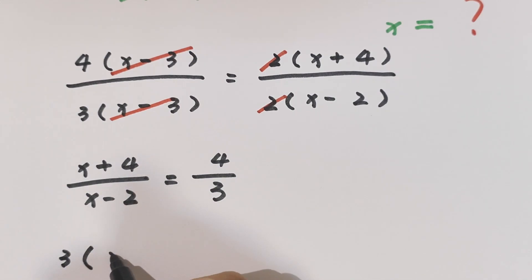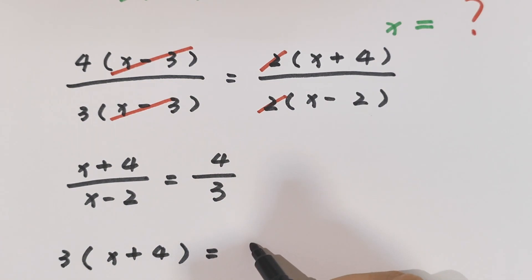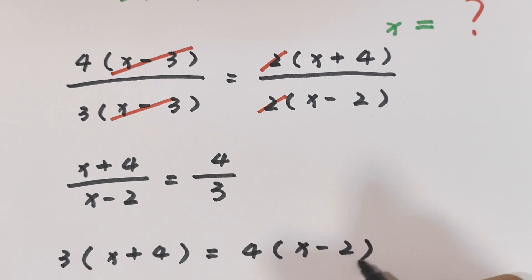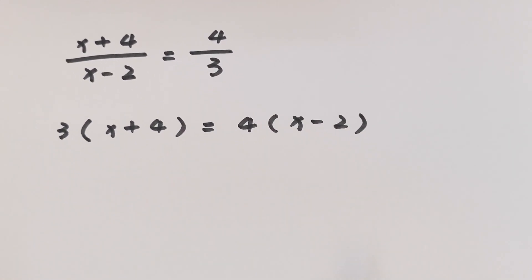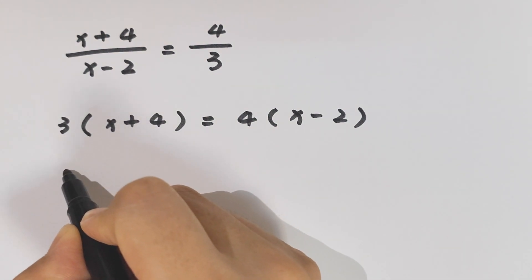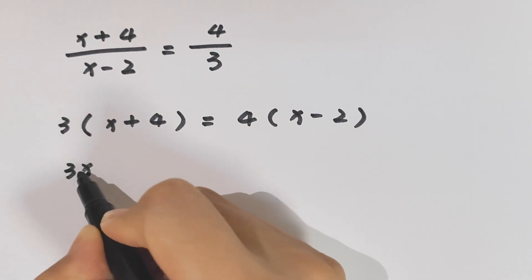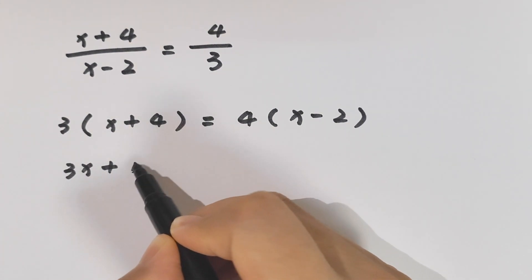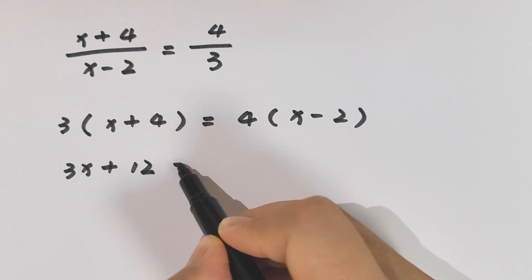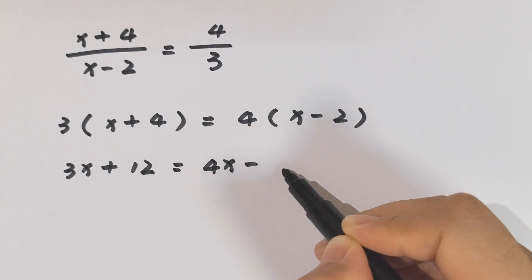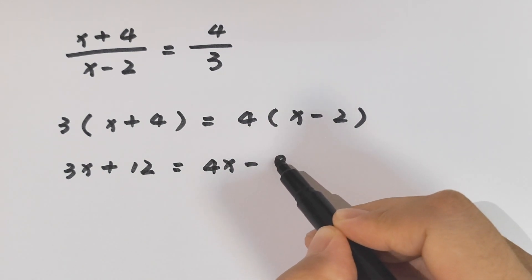It will be 3 times bracket x plus 4 equals 4 times bracket x minus 2. Now we open the brackets: 3 times x plus 3 times 4 equals 12, equals 4x minus 4 times 2 is 8.